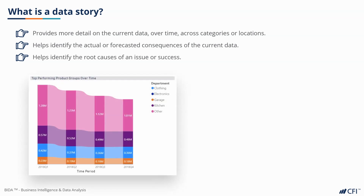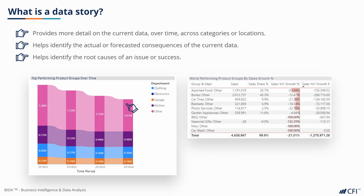In this example, we can see that the other department has been trending downwards over these four quarters. That's interesting, but I can't do anything with that. If I click on the other category, the table on the right now shows me which product groups are responsible for the decline in sales. Now I know that I need to speak with the assorted foods department to better understand our sales decline. A data story helps tie together those valuable pieces of information with insights that allow us to take action.